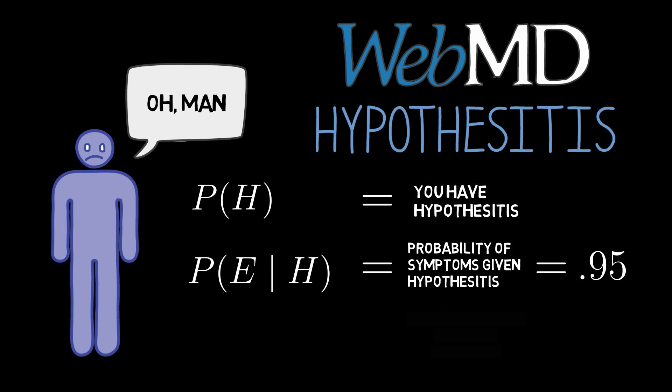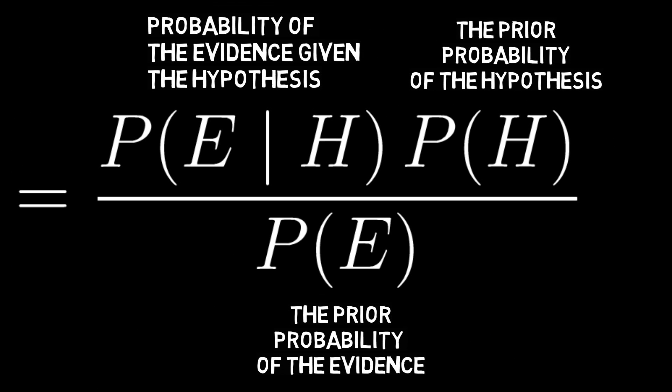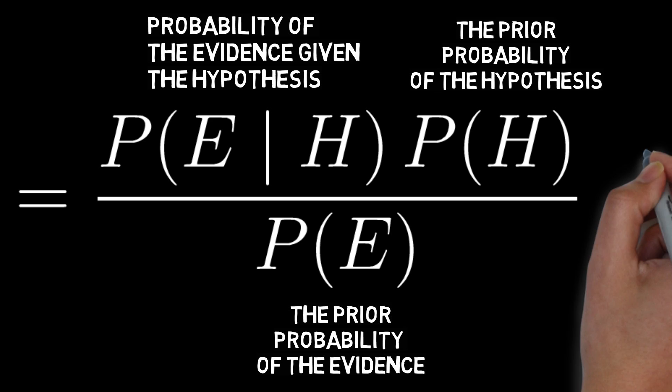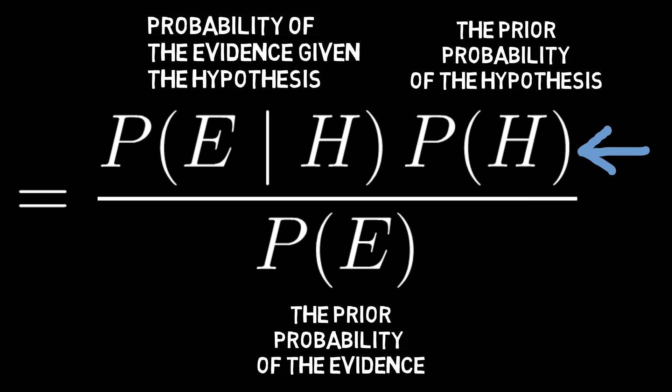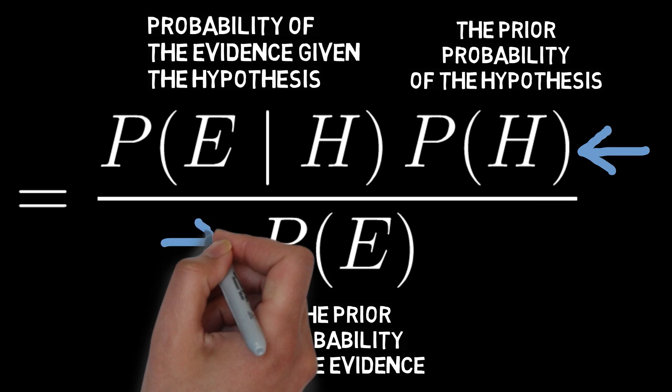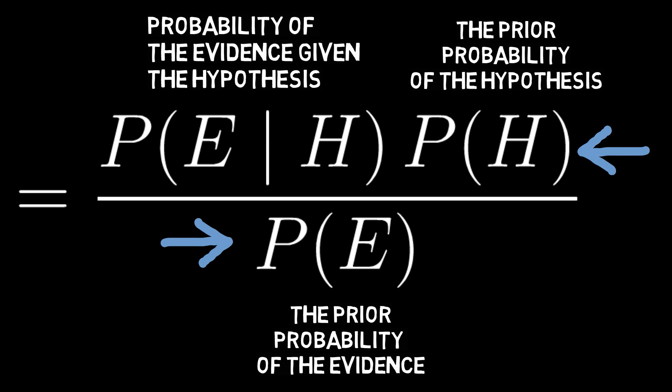So let's say P of E given H, or P of symptoms given hypothesitis, equals 0.95. You begin to freak out, but then you remember Bayes' theorem. It tells you that there are two more things you need to know in order to figure out the probability that you have hypothesitis, the prior probability that you would come down with hypothesitis, and the prior probability that you would have the symptoms that you actually have.